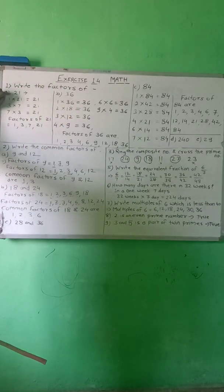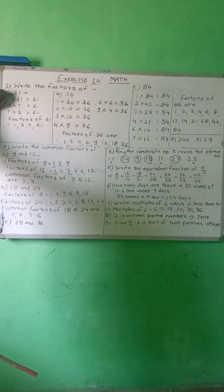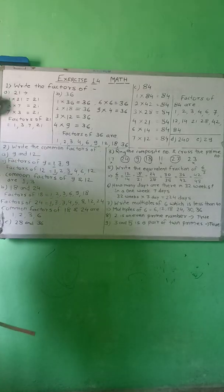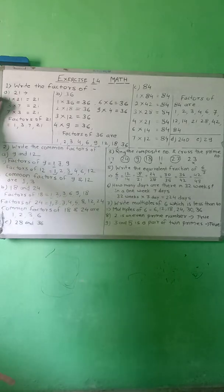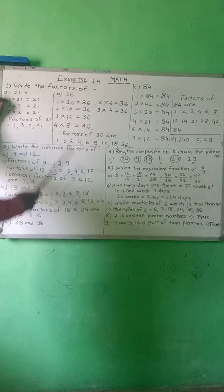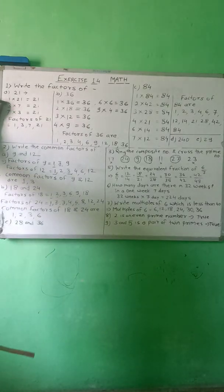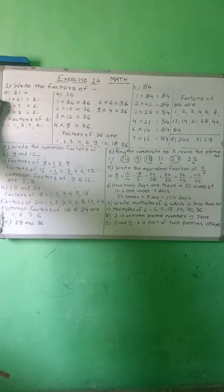We can take an example. First, 21 — find out the factors of 21. 1 multiplied by 21 is equal to 21. Then next, 2: 2 is not completely divisible into 21, so 2 is not a factor of 21.